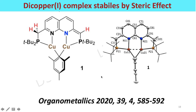Some more recent examples isolated due to bulky groups include compounds bearing mesityl, pincer, and tert-butyl groups. A di-copper(I) complex has been isolated due to the steric effect, and its single-crystal X-ray structure has also been studied. You can see the metal-metal interaction in the copper-copper bond. This work is published in Organometallics 2020, volume 39, pages 585 to 592.